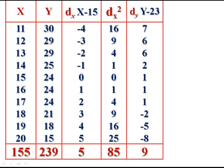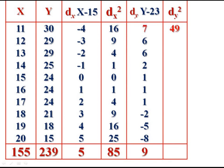Then square the deviations: dy squared. 7 squared is 49. 6 squared is 36. And so on: 36, 4, 1, 1, 1, 1, 4, 25, 64. Get the summation of dy squared. Sigma dy squared equals 221.